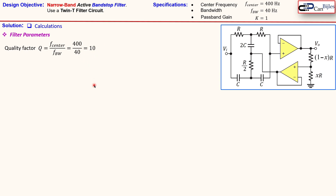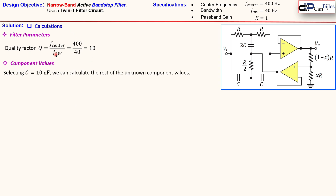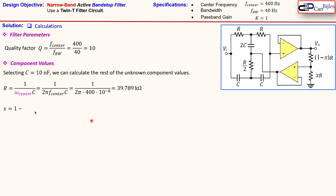You see that this is a high quality factor, which is also why we call this a narrow band filter. Now we can calculate the component values. By selecting C equal to 10 nanofarads — these two capacitors and also the doubled capacitor — we can calculate the resistor as one over (omega_center times C), which results in approximately 40 kilo-ohms. We then calculate x as one minus one over (4Q), which gives x equal to 0.975.